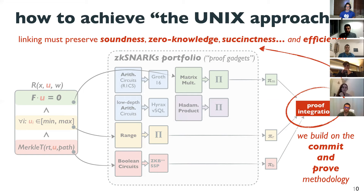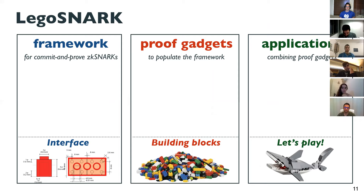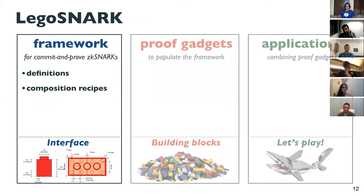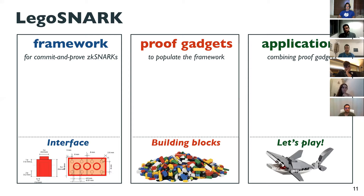The rest of the talk covers three main parts of Lego SNARKs. First, the framework for commit-and-prove SNARKs — designing the interface that all specific modules must respect in order to talk to each other — including definitions and composition recipes. Second, the proof gadgets we build for special-purpose schemes. Third, applications: how we compose them and what new results we can obtain.